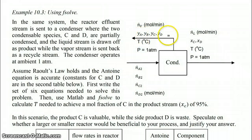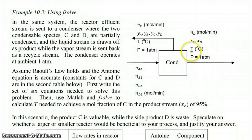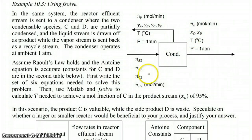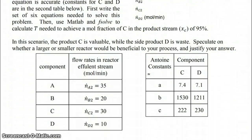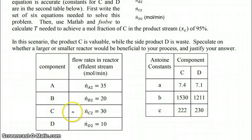Our unknowns are: we don't know the composition of the vapor stream, we don't know the molar flow rates N.V or N.L, and we don't know temperature. Our molar flow rates out of the reactor and into the condenser are shown here. These are not the same values as what we solved for in the previous example, but we're just going to use these numbers for this example.